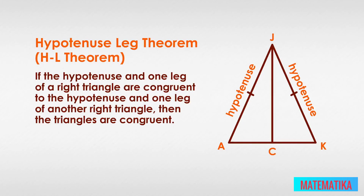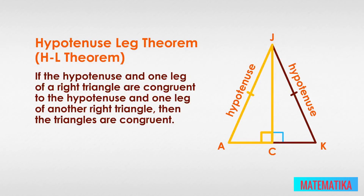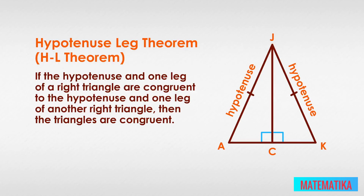Label its point on AK as point C. That altitude JC complies with the isosceles triangle theorem, which makes it the perpendicular bisector of the base and the angle bisector of the vertex angle. We have two right angles at point C: angle JCA and angle JCK. We have two right triangles, triangle JAC and triangle JKC, sharing side JC.